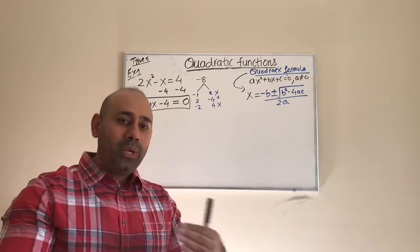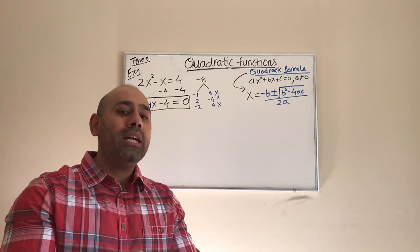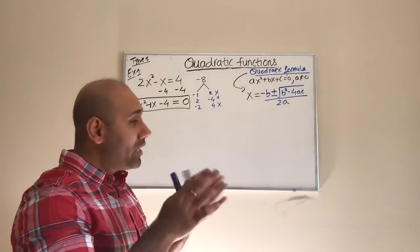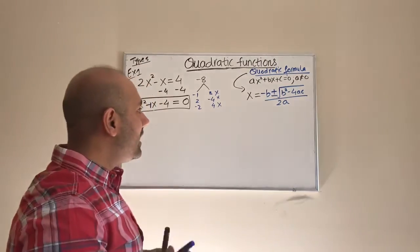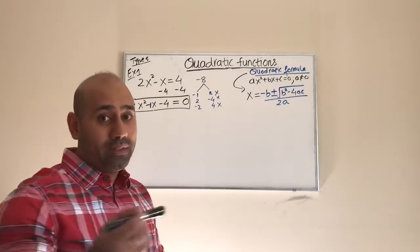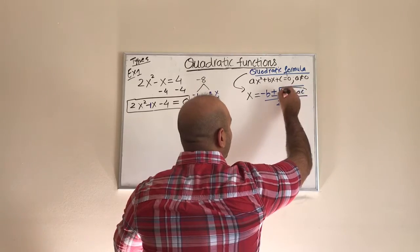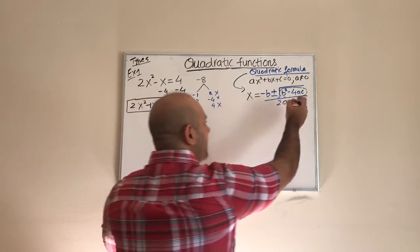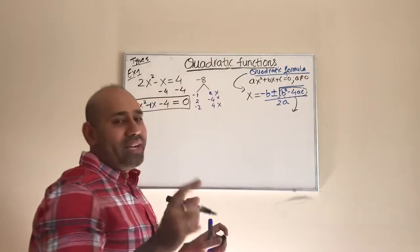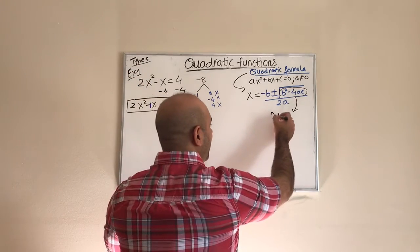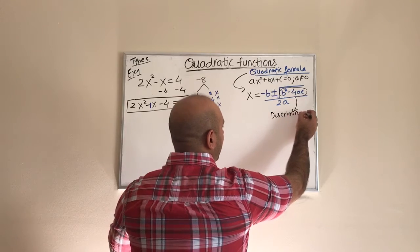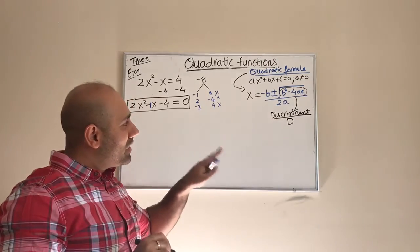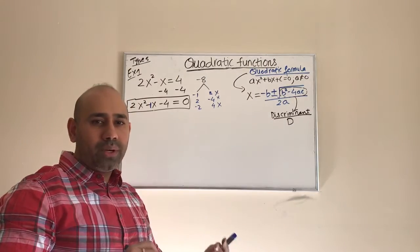The plus-or-minus means we can have at most two solutions — though we may also have one solution or no real solutions, and we'll see all of that as we dig deeper into the quadratic formula. The expression inside the radical — b squared minus 4ac — is a very important piece called the discriminant, sometimes written as D. In my next video we'll talk about what the discriminant tells us about the solutions of a quadratic function.